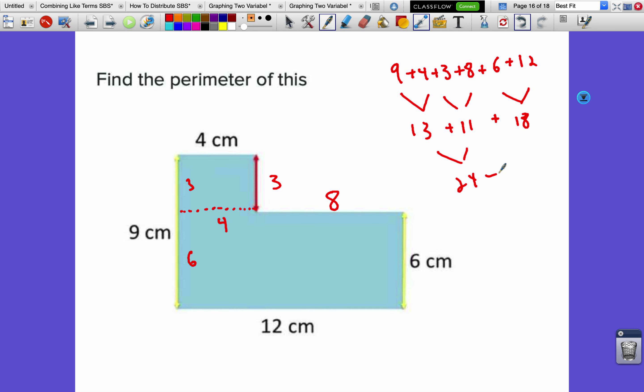We get 24 plus 18, which is 34 plus 8 equals 42, and we give it the unit of centimeters.